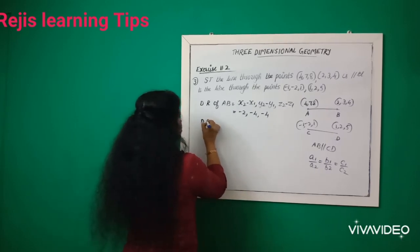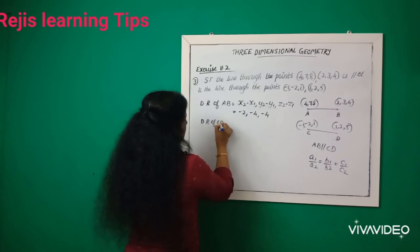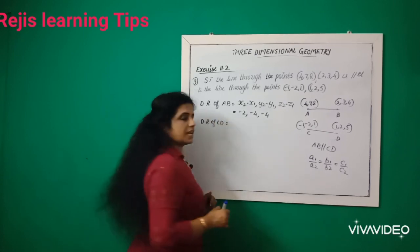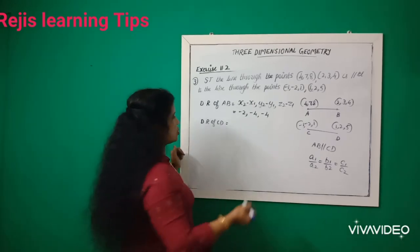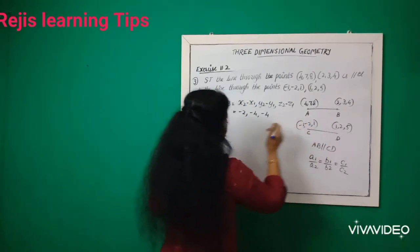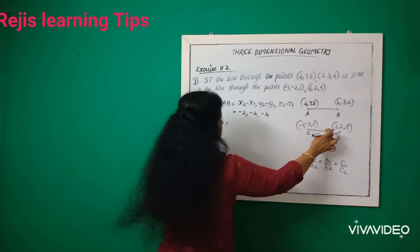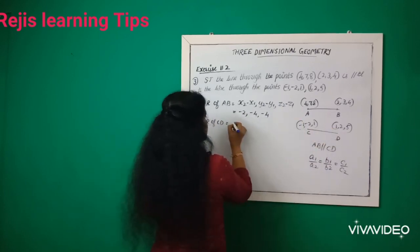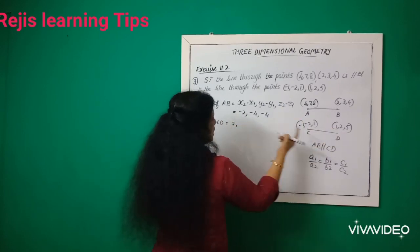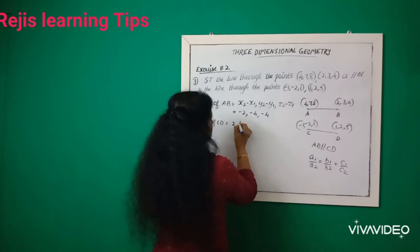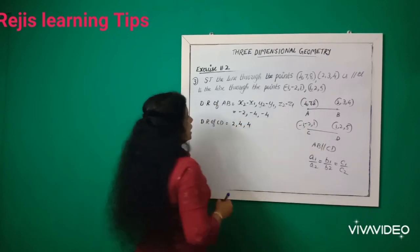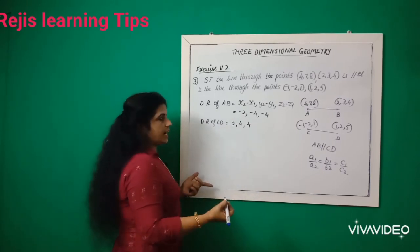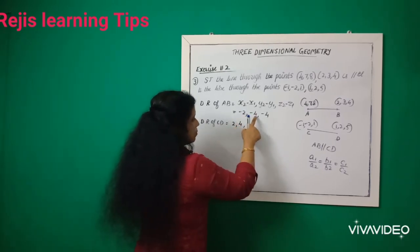Direction ratios of CD. Using the same method, x2 minus x1 means 1 minus (-1), that is 2. Then 2 minus (-2), that is 4. And 5 minus 1, that is 4. These are the directional ratios of CD.